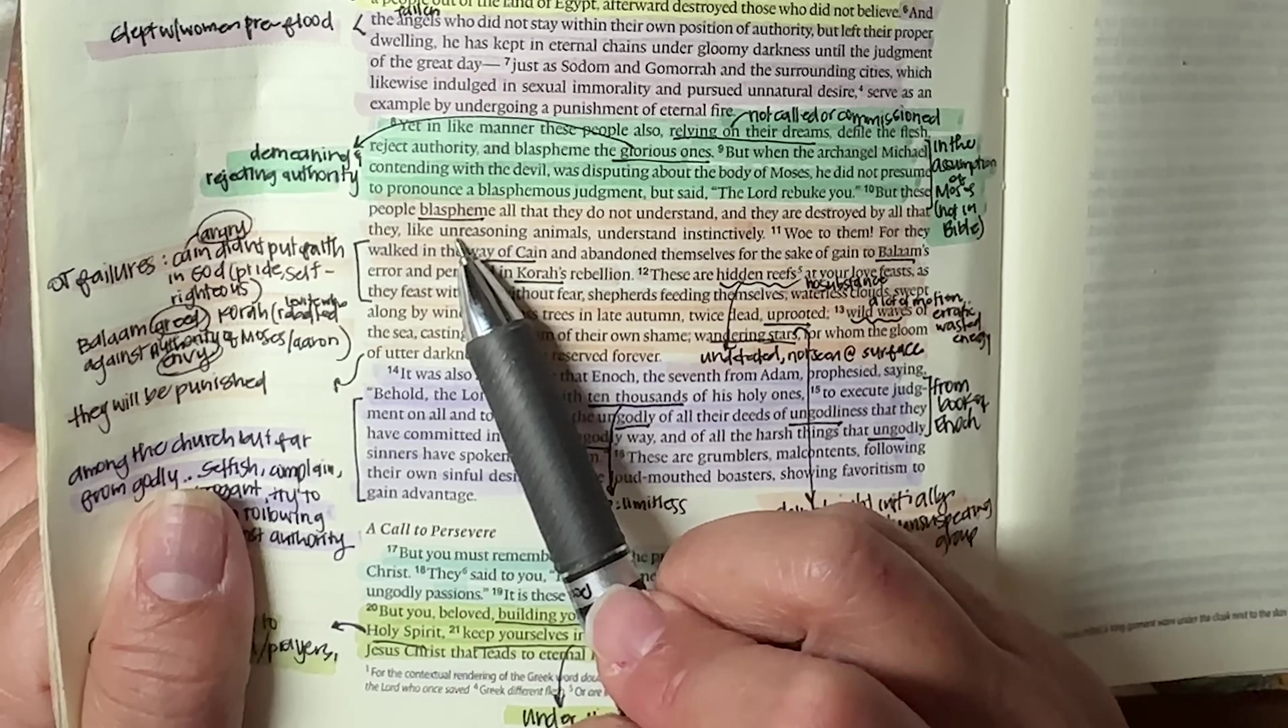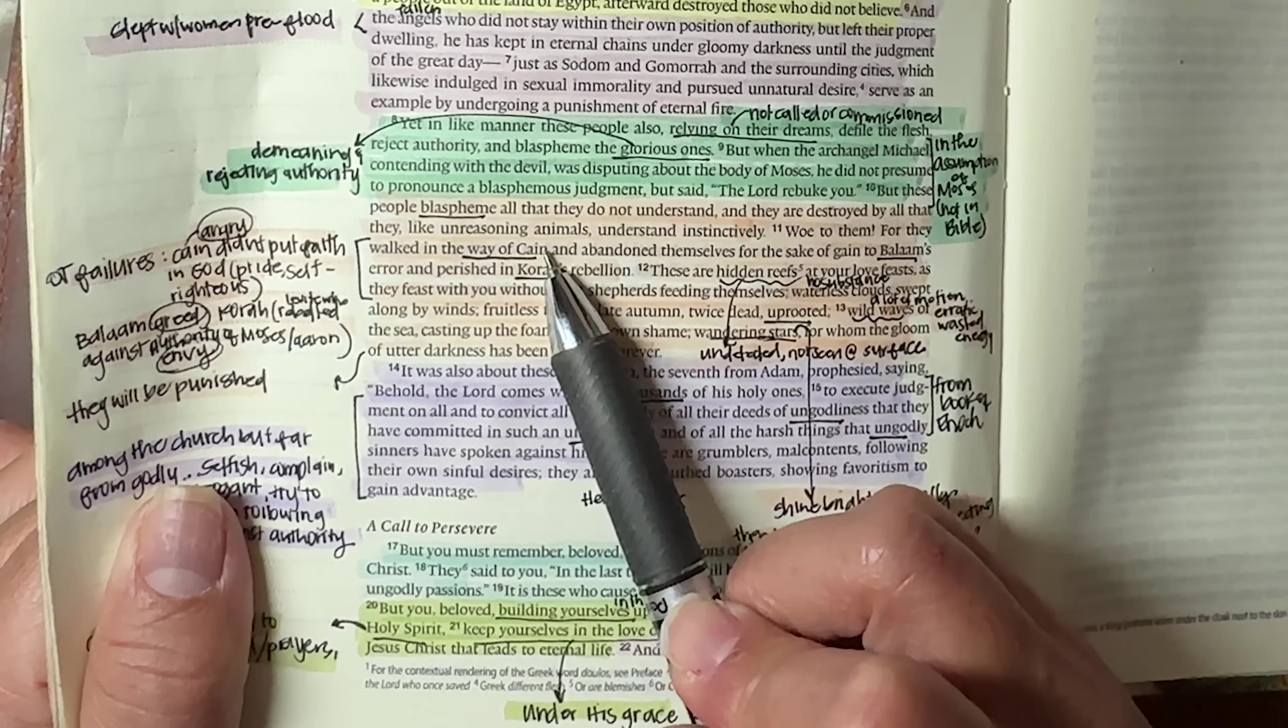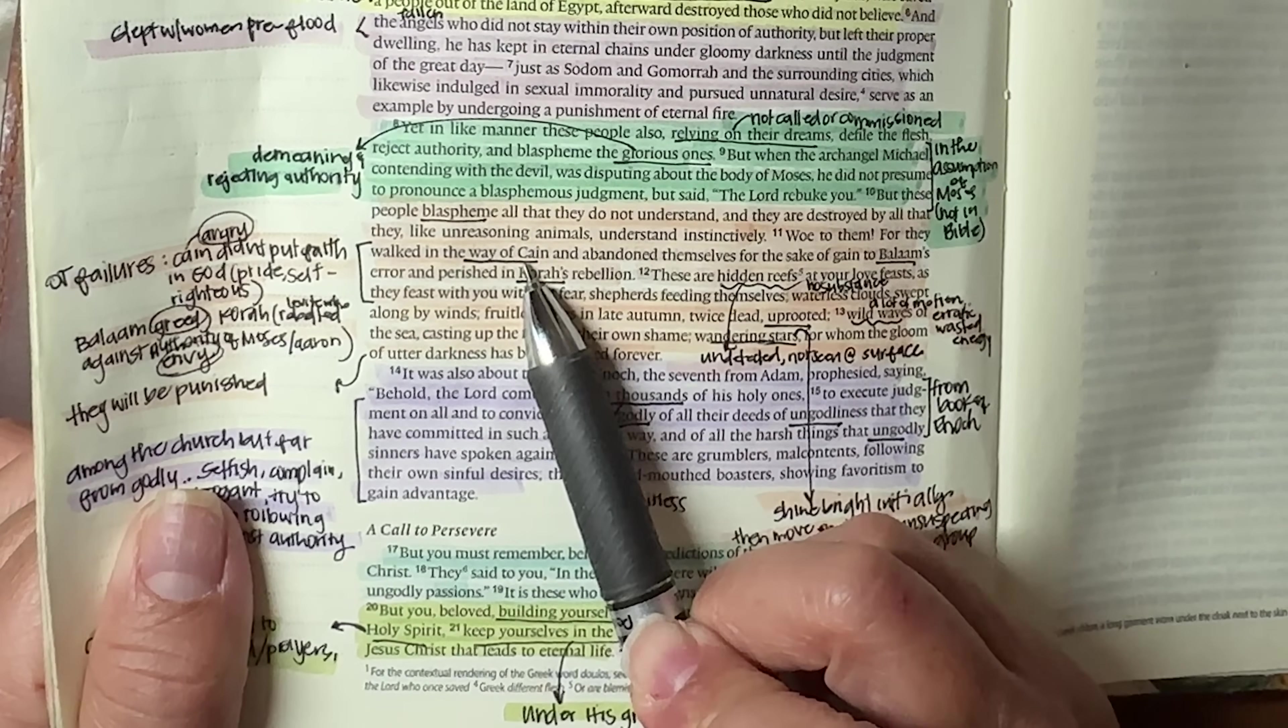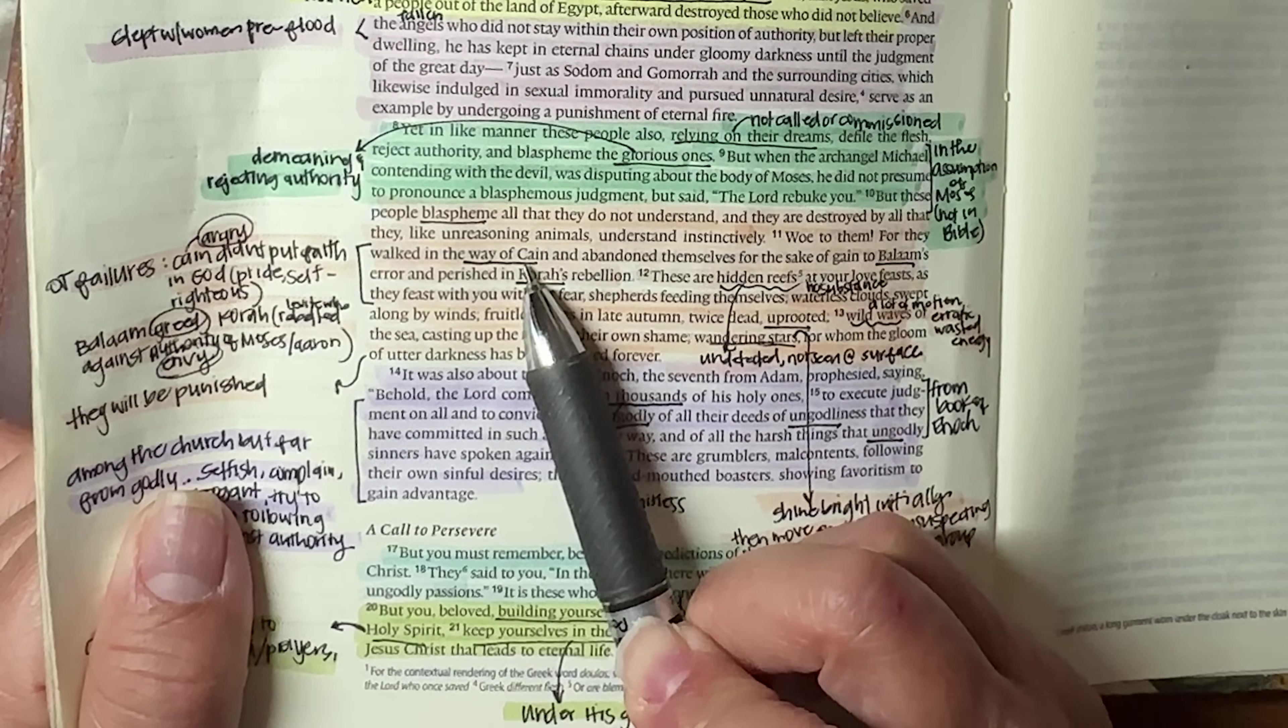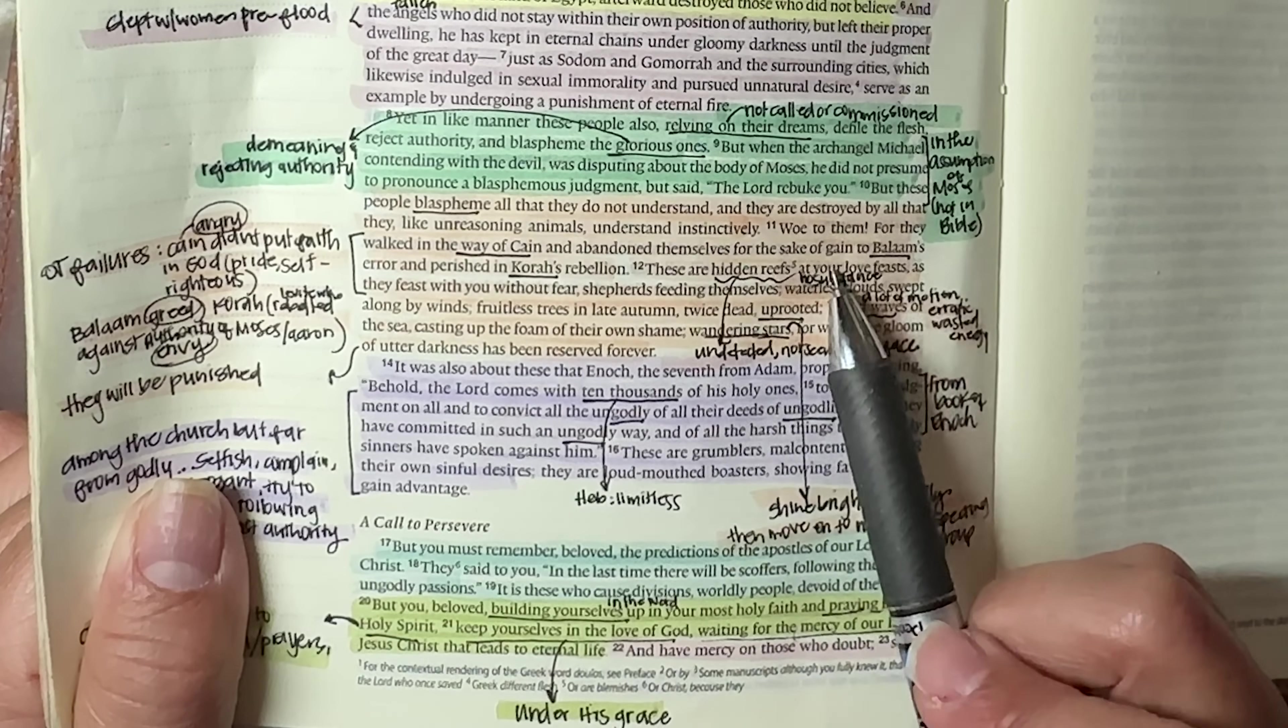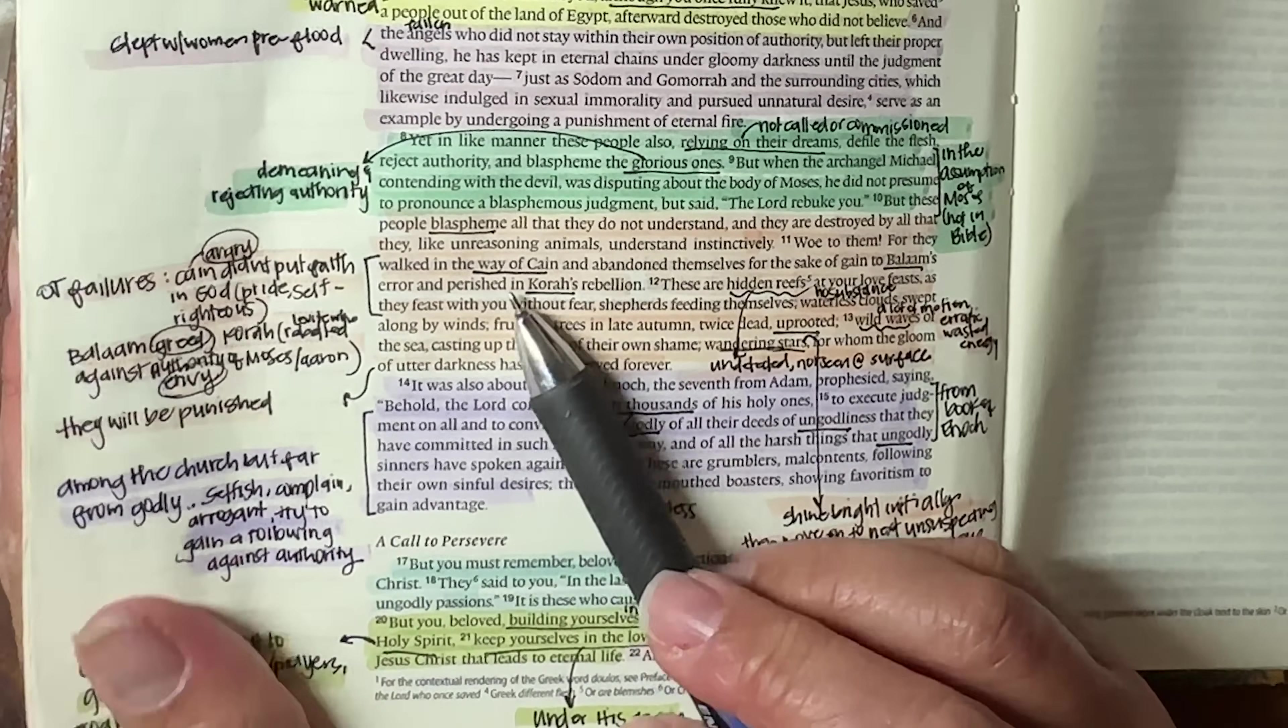But these people blaspheme all that they do not understand and they are destroyed by all that they, like unreasoning animals, understand instinctively. Woe to them, for they walked in the way of Cain. So we are going to see three people here who Jude is referring to as failures in the Old Testament. And that's basically what these people are like. So we had the way of Cain and abandoned themselves for the sake of gain to Balaam's error and perished in Korah's rebellion.